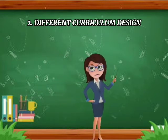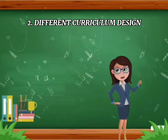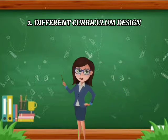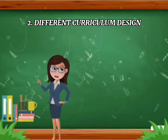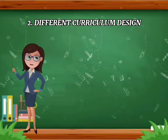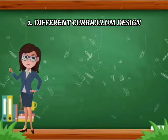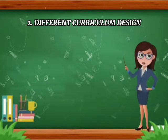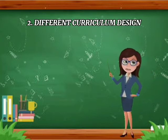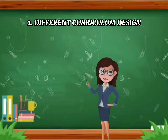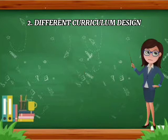Academic discipline design is also applicable in senior high school, where we have ABM, HUMSS, and STEM. In HUMSS, students learn history, earth science, and Philippine history — everything about humanity. In ABM, they learn about accounting and business management. In STEM, they learn about experimentation in science, biology, and chemistry.